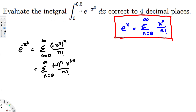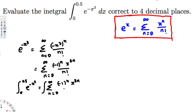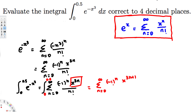Now we integrate this power series from 0 to 0.5. Integrating e to the negative x cubed is the same as integrating this power series. When we integrate, we only deal with the x term — the summation gives us negative 1 to the n, times x to the power 3n+1, over n factorial times 3n+1, evaluated from 0 to 0.5.